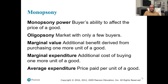Marginal value is just like a demand curve — it is the additional benefit derived from purchasing one more unit of a good. Marginal expenditure is the additional cost of buying one more unit of a good, and it produces an upward sloping marginal expenditure curve.